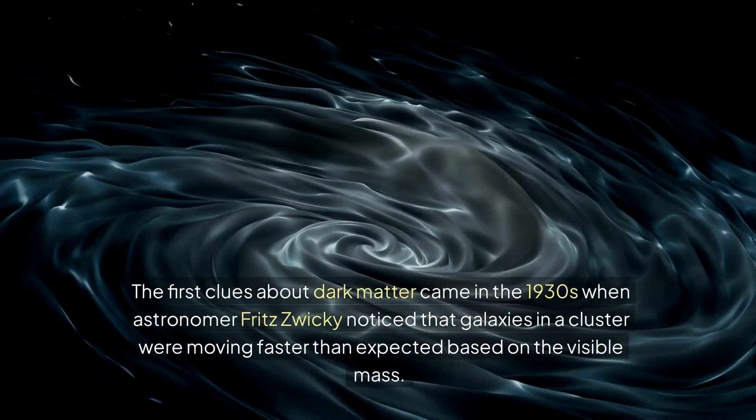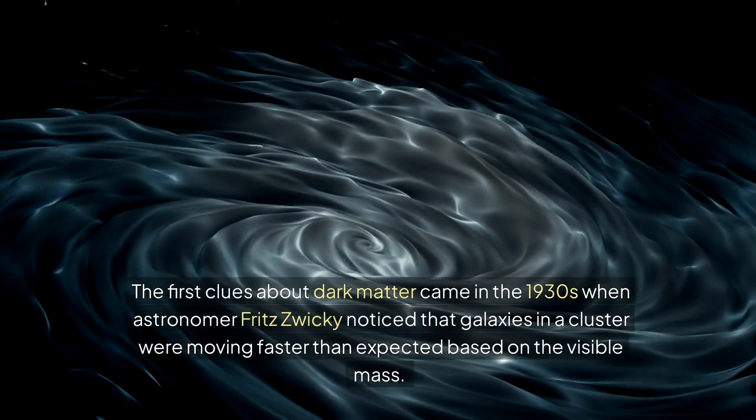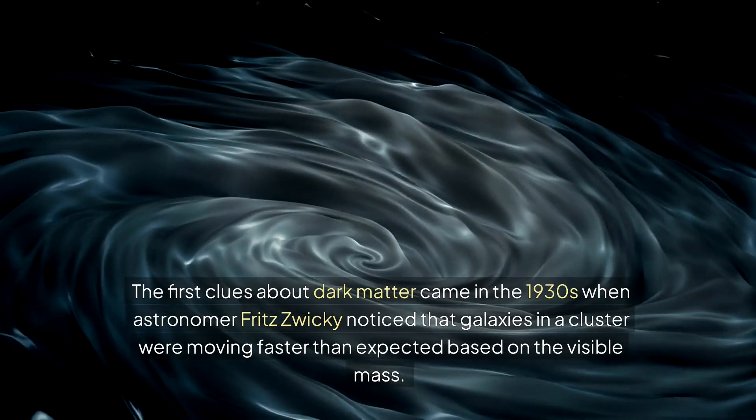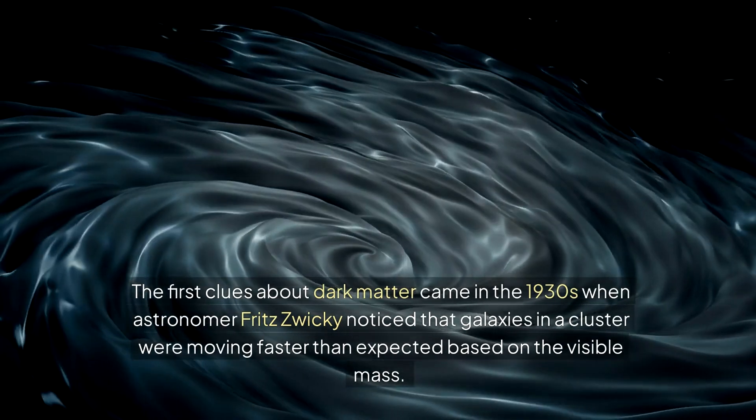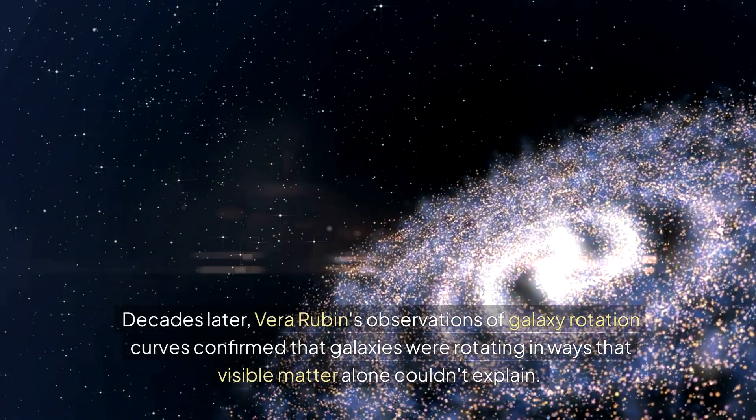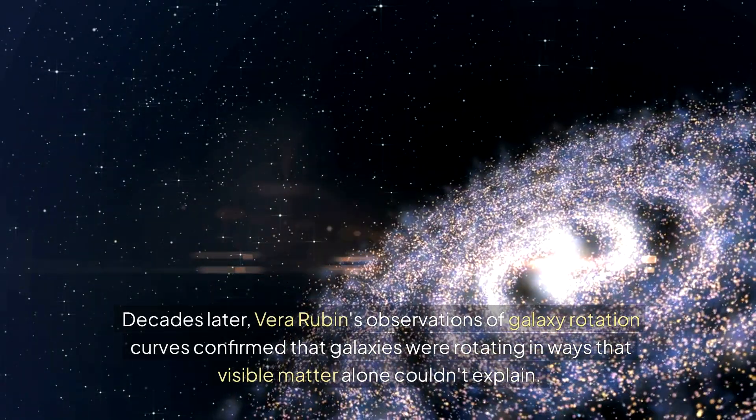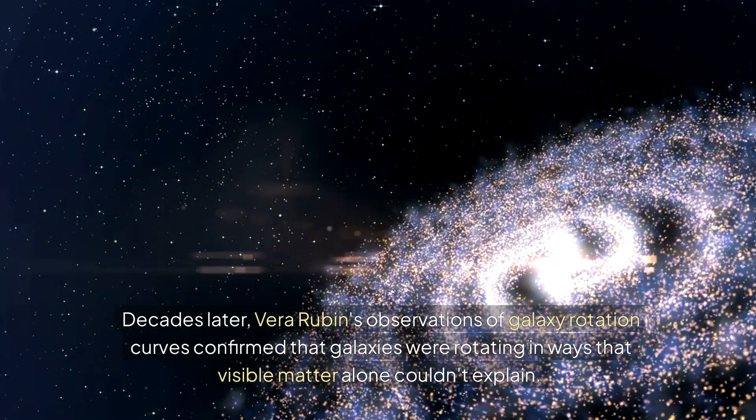The first clues about dark matter came in the 1930s when astronomer Fritz Zwicky noticed that galaxies in a cluster were moving faster than expected based on the visible mass. Decades later, Vera Rubin's observations of galaxy rotation curves confirmed that galaxies were rotating in ways that visible matter alone couldn't explain.